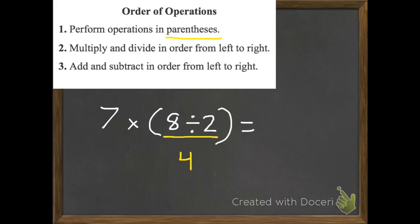Now we check to see if we have any other parentheses — we don't. If you ever have more than one, we usually go from left to right until all the parentheses are done. Step two is multiply and divide in order from left to right. So we do have something to multiply. Seven times four is 28. There's nothing left to multiply, divide, add, or subtract. So we're done. That's our answer: 28.